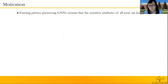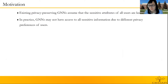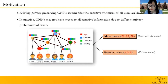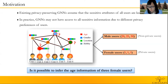We note that existing privacy preserving GNNs assume that sensitive attributes of all users are known before model training. In practice, due to the different privacy preferences of users, our GNN model may not have access to all sensitive information of users. For example, in this social network, three male users are willing to share their age information to make friends, but the other three female users are not willing to share their age information. Here, a problem arises: for an attacker, is it possible to infer the age information of the three female users based on their neighbors' information?